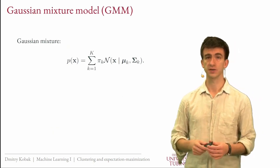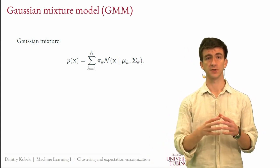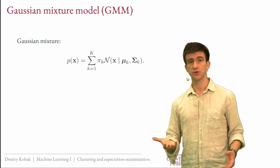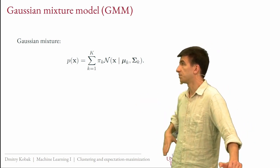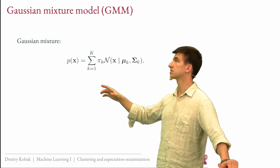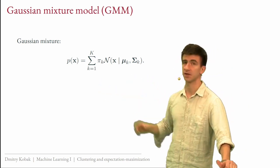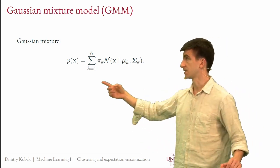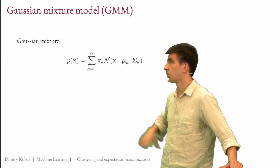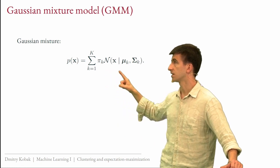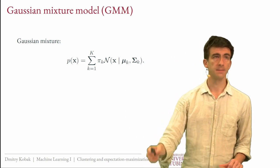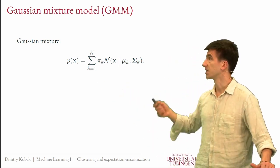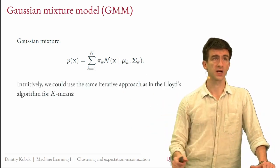All these cases can be addressed by using a more complex cluster model — this brings us to Gaussian mixture models (GMMs). A GMM assumes your samples come from a mixture distribution: a weighted sum of several Gaussians. The density is p(x) = sum over k of pi_k * N(x | mu_k, Sigma_k), where pi_k are weights summing to one, mu_k are the Gaussian means, and Sigma_k are the covariance matrices. We want to fit these parameters to our observed dataset.